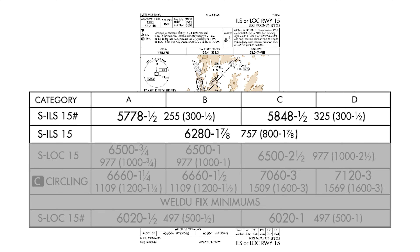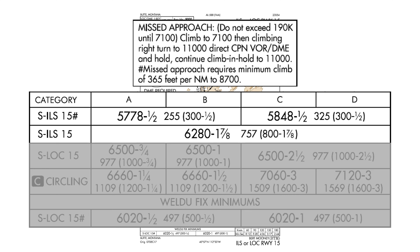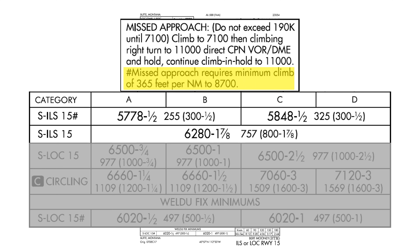However, looking closer at the minimums, you see a second line for the ILS with higher mins at 6,280. The first line has a hash mark next to it, indicating a note. The note is found in the missed approach: if you're using these minimums, you must be able to maintain a climb gradient of at least 365 feet per nautical mile through 8,700 MSL. In smaller aircraft with normally aspirated engines, this could be a struggle. If we can't make that gradient but can still do the standard 200 feet per nautical mile, we can shoot the approach but need to use the higher 6,280 decision altitude.